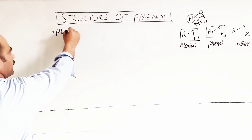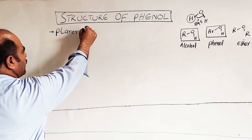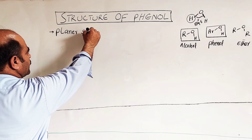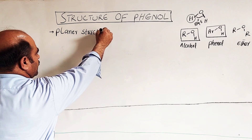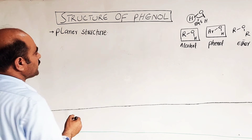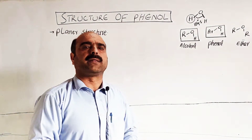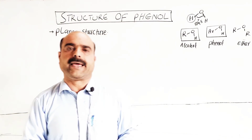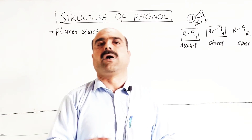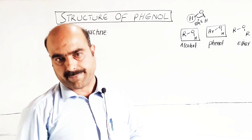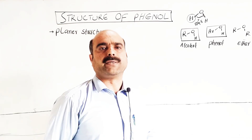Phenol has a planar structure. The planar structure is because the carbon attached to the OH group is an aromatic carbon, which is SP2 hybridized. This SP2 hybridization gives phenol its planar structure.